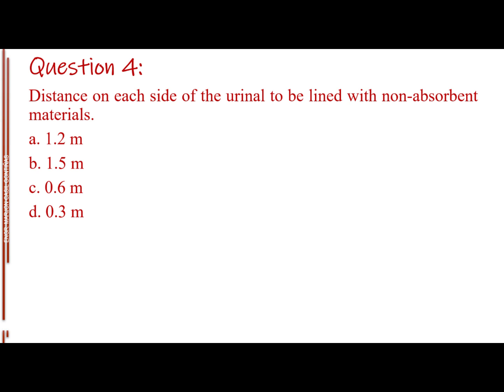Question number four. Distance on each side of the urinal to be lined with non-absorbent materials. Letter A, one-point-two meters. Letter B, one-point-five meters. Letter C, zero-point-six meter. Letter D, zero-point-three meter. The answer is letter C, zero-point-six meter.